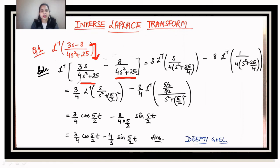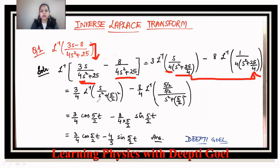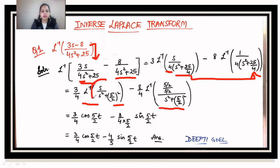In the standard formulas, the denominator is s²+a², so the coefficient of s² must be 1. We take 4 as a common factor, giving s²+25/4, which equals s²+(5/2)². Now the first term becomes (3/4)·Laplace inverse of s/[s²+(5/2)²], which corresponds to the cosine function, giving (3/4)·cos(5t/2).